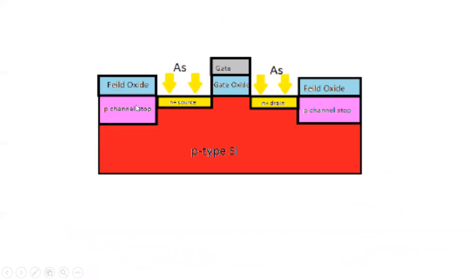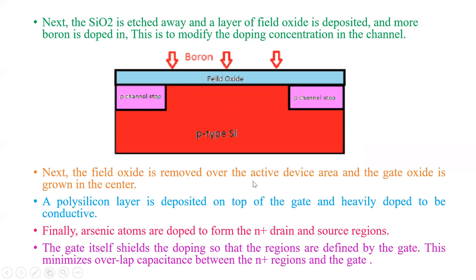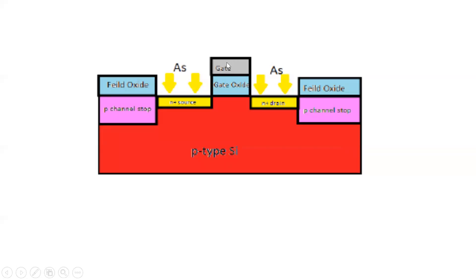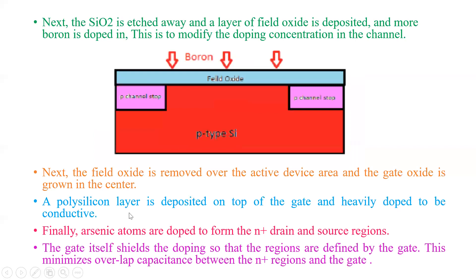In the final structure, we have the p-channel stop as a highly doped p-type region, the p-type silicon substrate, and the N+ source and drain regions formed by doping with arsenic. We also have the gate, gate oxide, field oxide, and the polysilicon layer on top of the gate, which is heavily doped to be conductive.